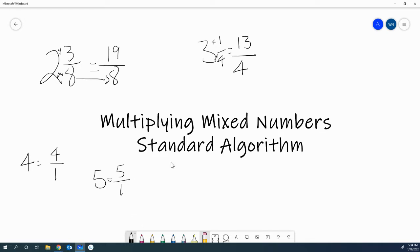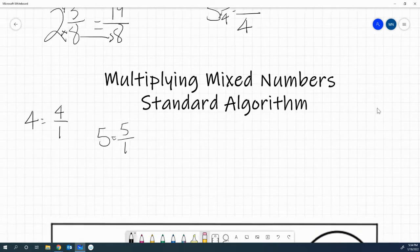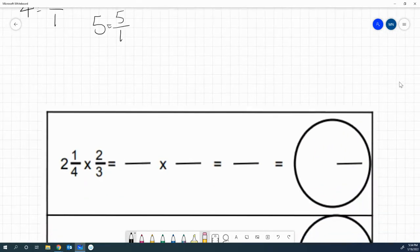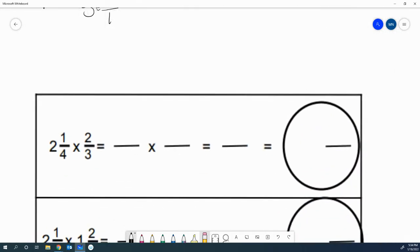Let's go ahead and dive into these notes. So our first problem says 2 and 1 fourth times 2 thirds. Let's take a look at this very first mixed number, 2 and 1 fourth. 2 times 4 plus 1. So we know 2 times 4 is 8 plus 1 is 9. So we're going to have 9. And our denominator is going to stay the same with 4.